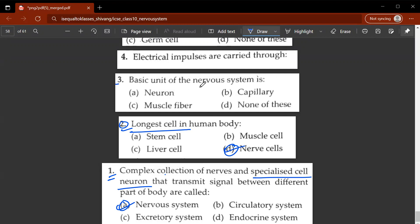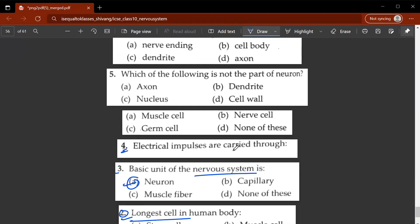Third question, basic unit of the nervous system is neuron A. Let's move on to the fourth question. Electrical impulses are carried through what? So they are carried through nerve cells. So B will be the correct option. Which of the following is not the part of a neuron? D, cell wall is not a part of a neuron.